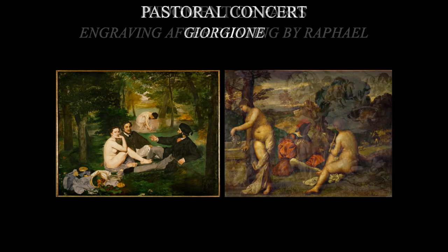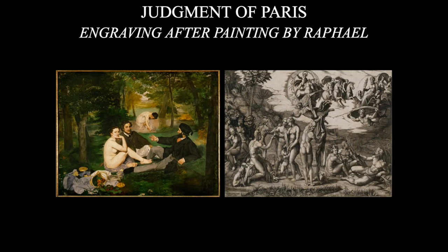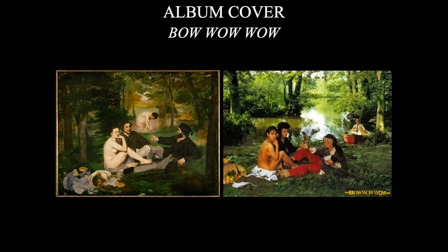Manet also referenced an engraving after a painting by Raphael that no longer exists, where three individuals in the bottom right-hand corner are in the same sitting position as the people in Manet's painting. So Manet definitely references not only the past but important artists — Giorgione and Raphael — as the basis for this painting. And even in contemporary times, we see this album cover recreating Manet's famous painting.